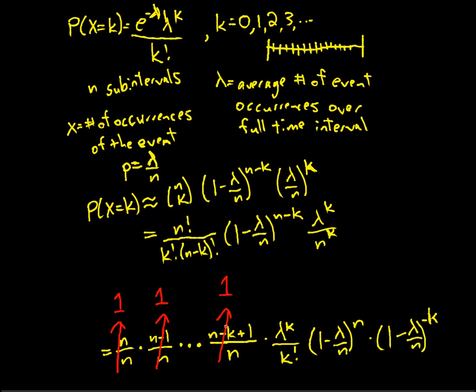And the same thing for all of those terms, so long as k remains fixed. Even if k were 100, if n were a billion, then you'd end up with 999,999,900 all over a billion, which is still close to 1. So all these terms are close to 1. You multiply them together and they become 1 in the limit. The lambda to the k is going to stay lambda to the k. k factorial is going to stay k factorial.